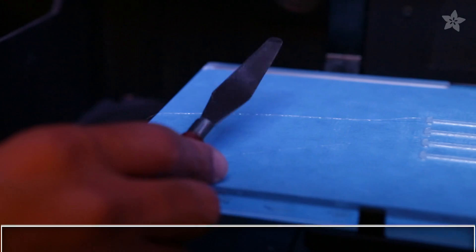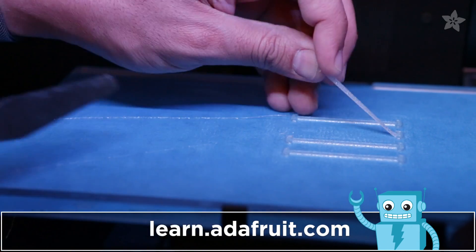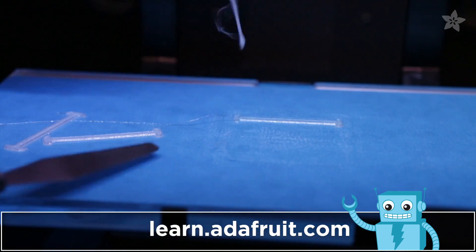Next we'll need to print flexible straps to hold each finger. You can measure your fingers and edit our source files to make a custom fit, so be sure to check out our guide on the Adafruit Learning System for more details.